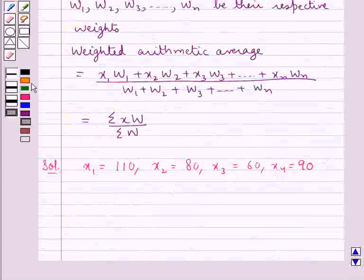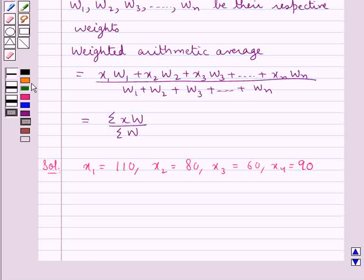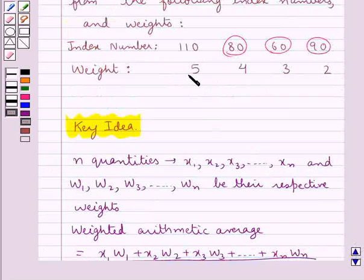We are also given the respective weights which we denote by w₁, w₂, w₃ and w₄. So w₁, that is the weight for the index number x₁, is 5,